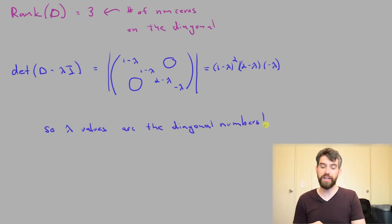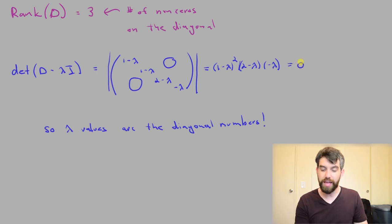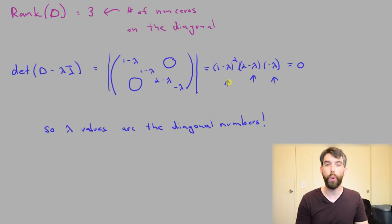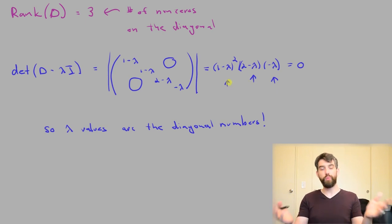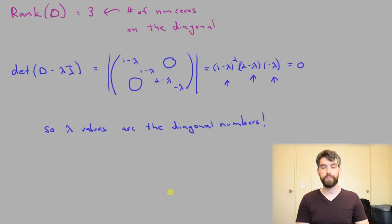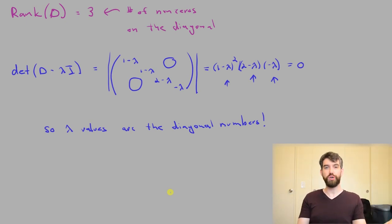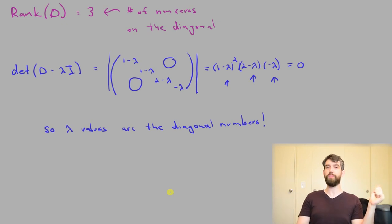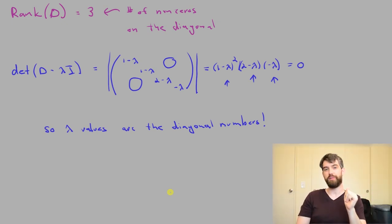For this specific example, setting it equal to zero, I get λ = 0, λ = 2, and λ = 1 with multiplicity 2 because of the exponent. Generically, the eigenvalues with their multiplicities are just whatever those diagonal elements are. Basically everything we're doing in linear algebra is completely trivial for diagonal matrices, so we're going to really like diagonal matrices.